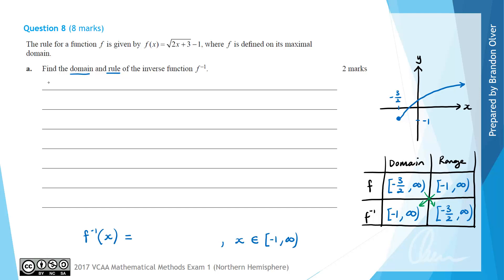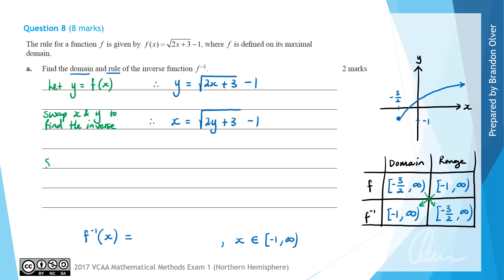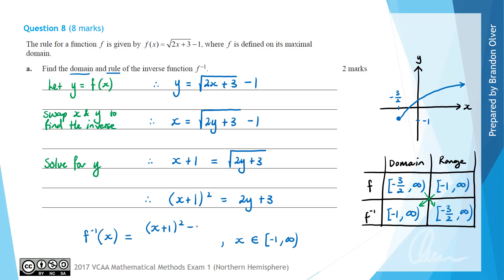Next we need to find the rule. Our starting point is to let y equal f(x), so y equals the square root of 2x plus 3 minus 1. We swap x and y to find the inverse, giving x equals the square root of 2y plus 3 subtract 1. Adding 1 to both sides: x plus 1 equals the square root of 2y plus 3. Squaring both sides: (x+1)² equals 2y plus 3. Subtracting 3 and dividing by 2 gives the rule for f⁻¹.